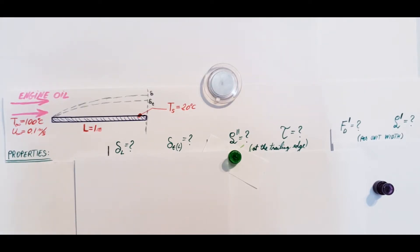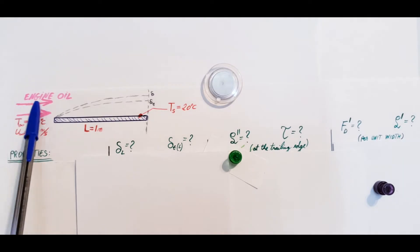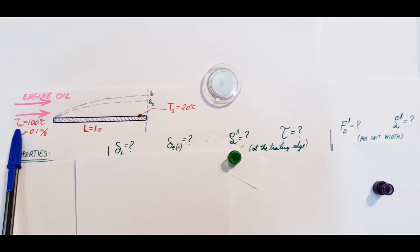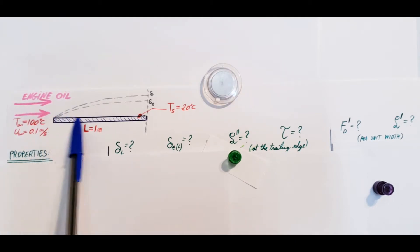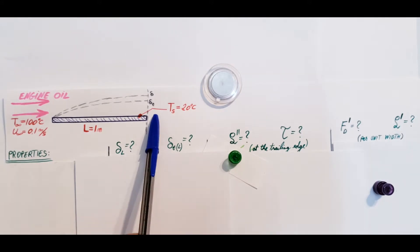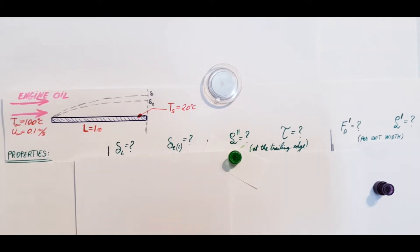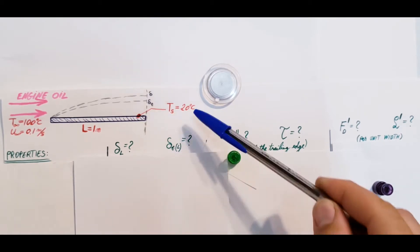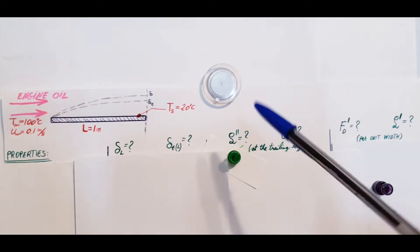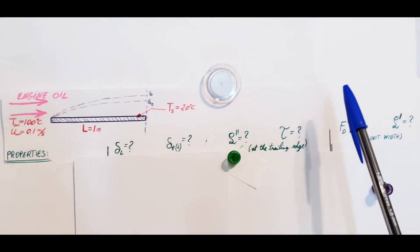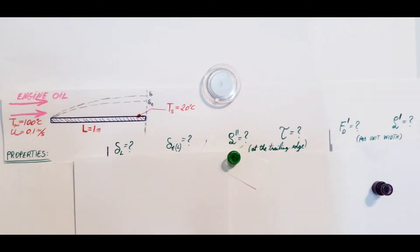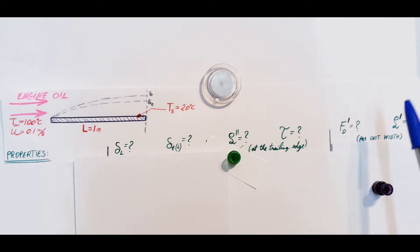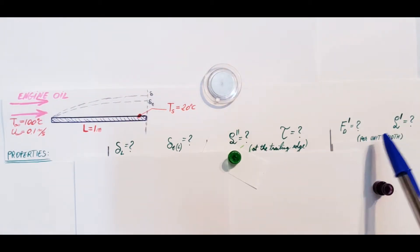This is a heat transfer problem dealing with engine oil flowing over a flat plate. It has a velocity of 0.1 meters per second and a temperature of 100 degrees Celsius. The flat plate has a length of 1 meter and the surface temperature is 20 degrees Celsius. We need to find the velocity and thermal boundary layer thickness at the trailing edge, the local heat flux and surface shear stress at the trailing edge, and the total drag force and heat transfer per unit width.